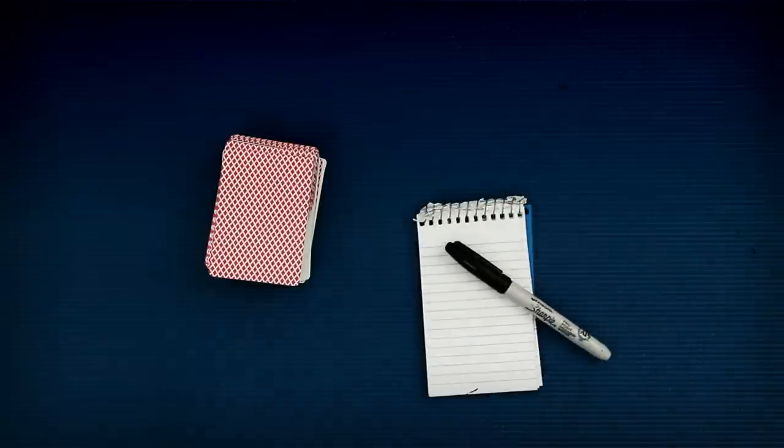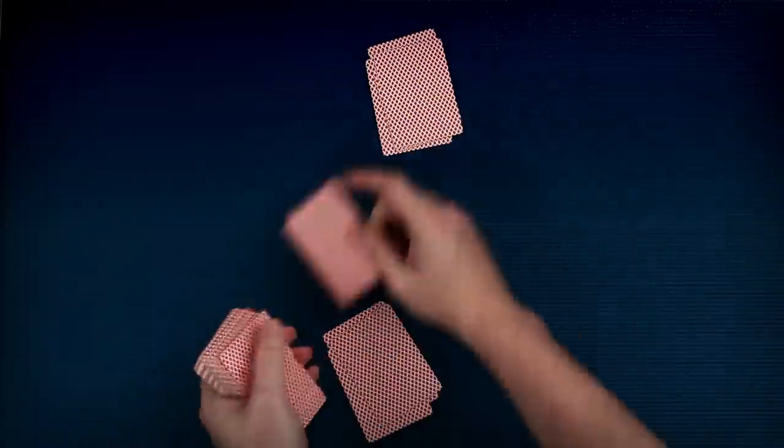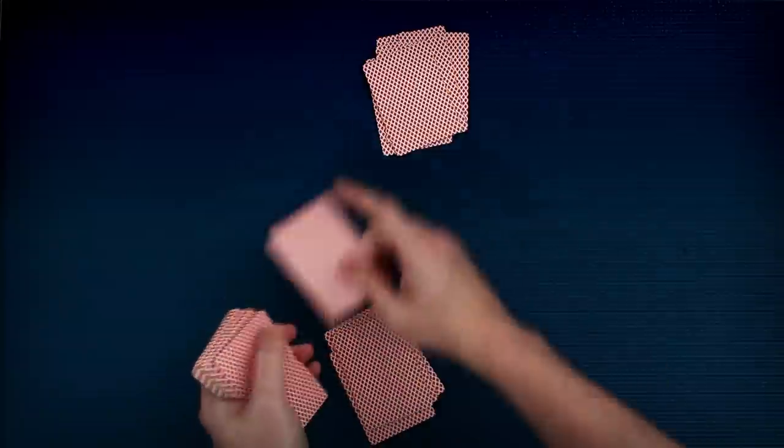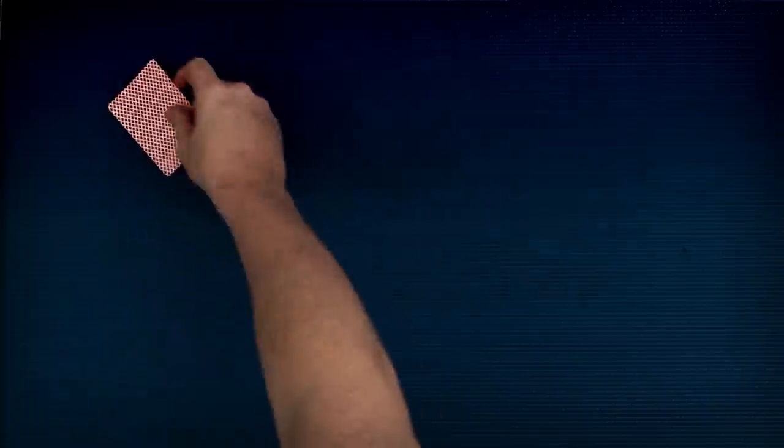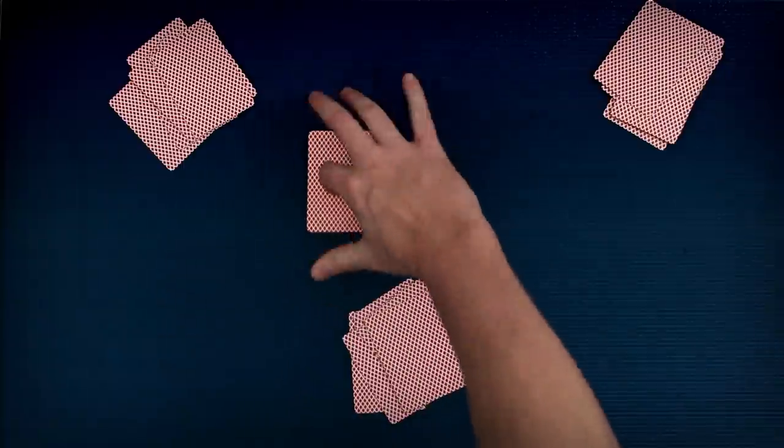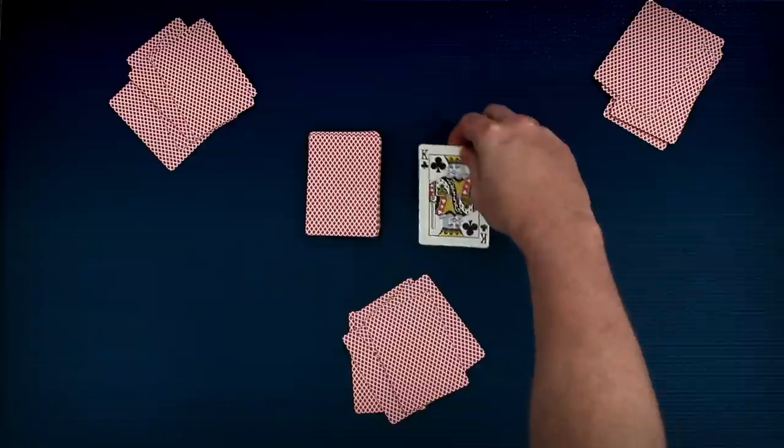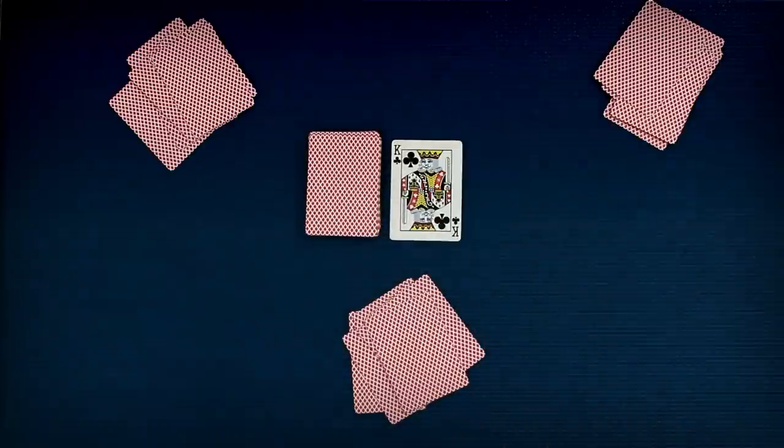You'll also need a pen and a paper to keep score. Randomly choose who deals the first round and then take turns clockwise dealing. The dealer shuffles the deck and if there are only two players, the dealer deals 13 cards each. If there are three or more players, the dealer deals seven cards each. The remaining cards are placed face down in the middle. That is called the stock. The dealer takes the top card from the stock and turns it face up on the table. That starts the discard pile.